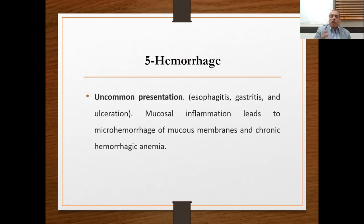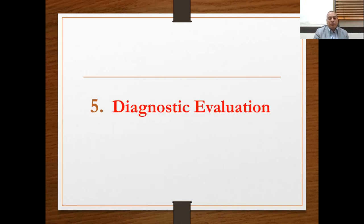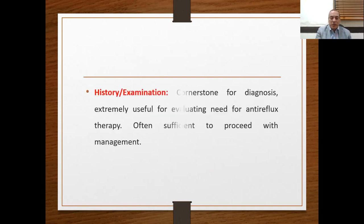Finally, hemorrhage is an uncommon presentation. Mucosal inflammation may lead to micro-hemorrhage of the mucous membrane and chronic hemorrhagic anemia. A small percentage of children may present with melena or hematochezia.